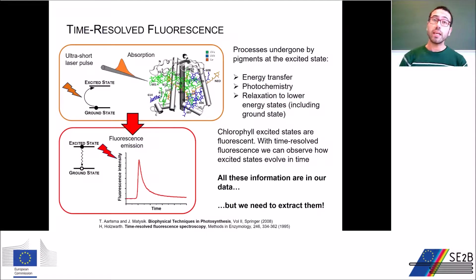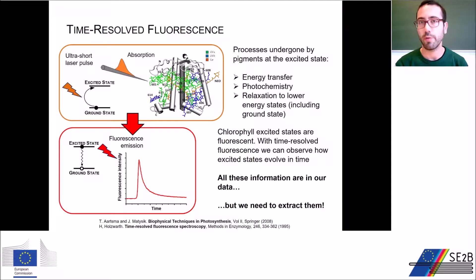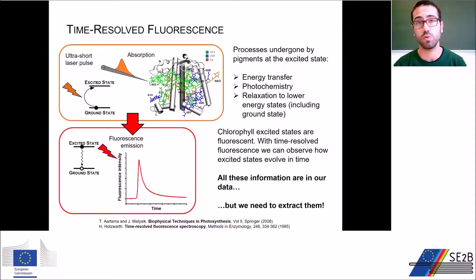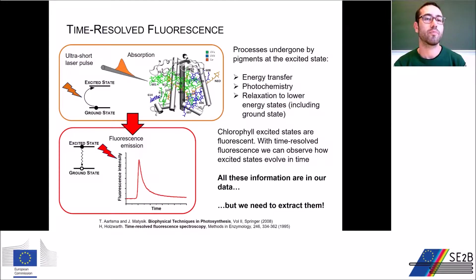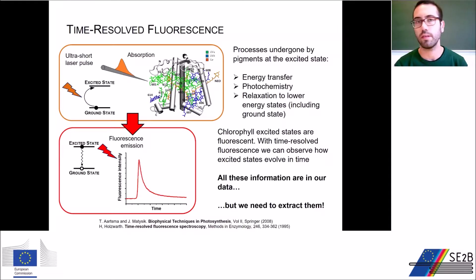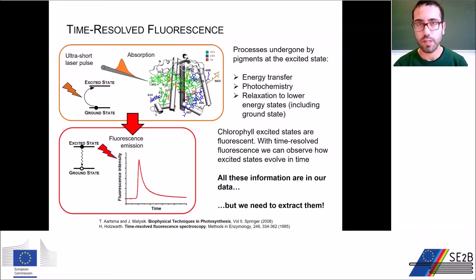The technique has been explained in a previous presentation, so I will just quickly recap it. We use an ultra-short laser pulse to excite our system, which for example is an antenna-binding pigment. The laser will induce absorption of light, and this can produce an excited state in some of the pigments. The excited state will then relax back to the ground state, and by doing so it can emit fluorescence.